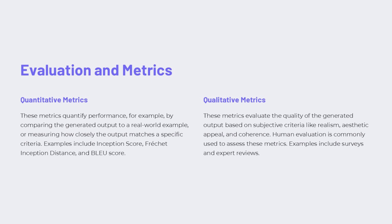Quantitative metrics provide numerical measures of performance, like comparing model output to real-world examples or specific criteria. Examples include inception score, Fréchet inception distance, and BLEU score. Qualitative metrics assess the subjective quality of generated output, like realism, aesthetic appeal, and coherence, with human evaluation through surveys and expert reviews being common methods. Both types of metrics are important — quantitative metrics provide objective benchmarks, while qualitative metrics capture more subjective aspects of output quality.